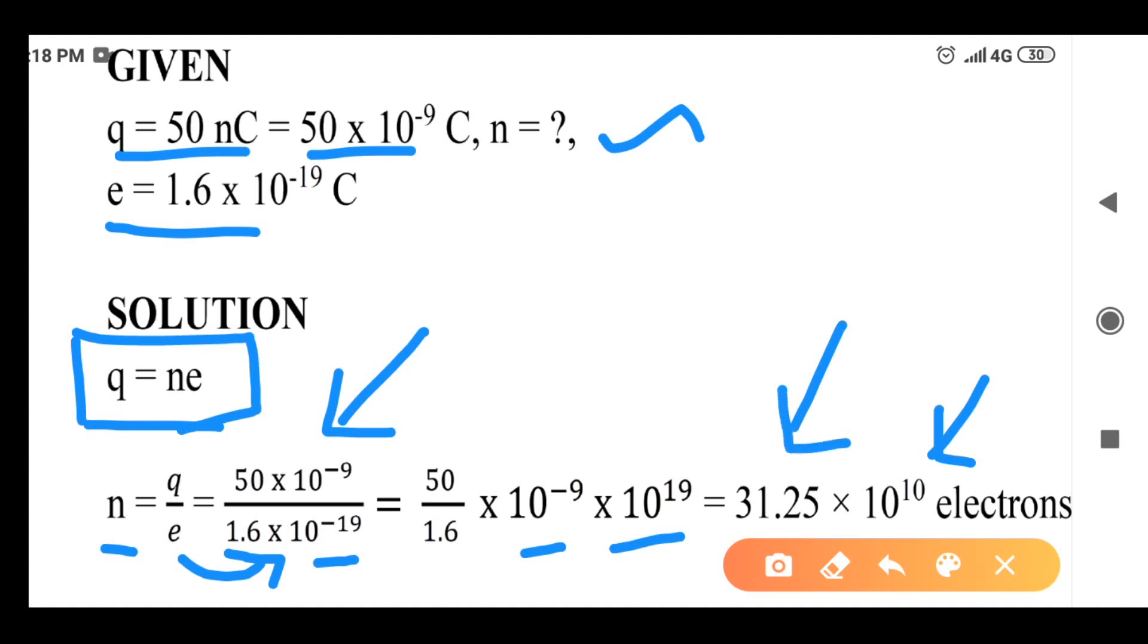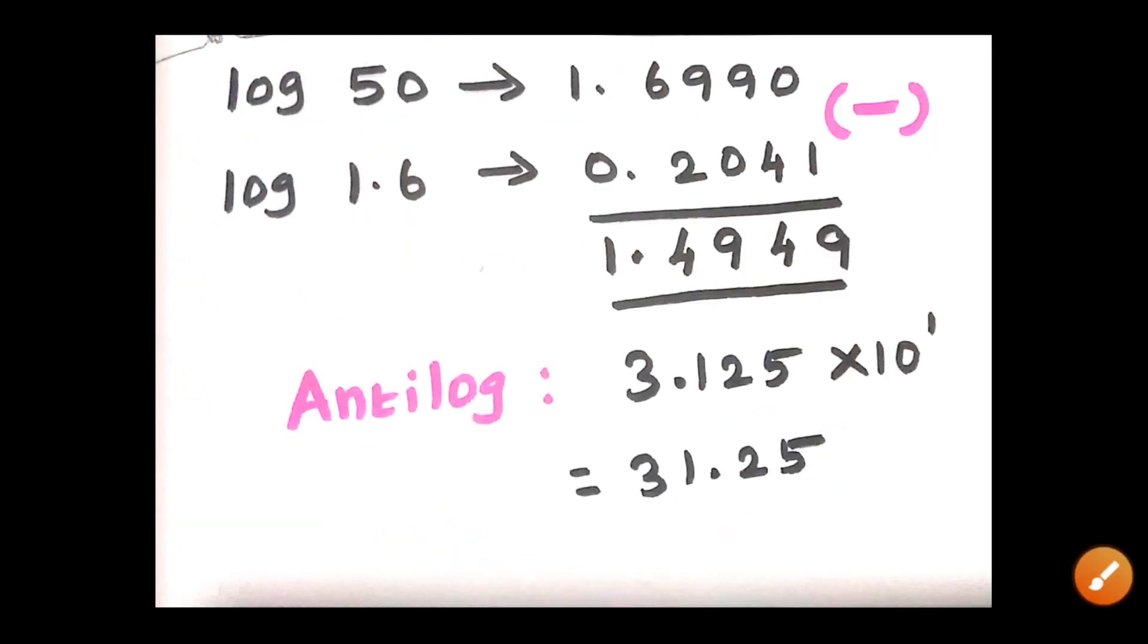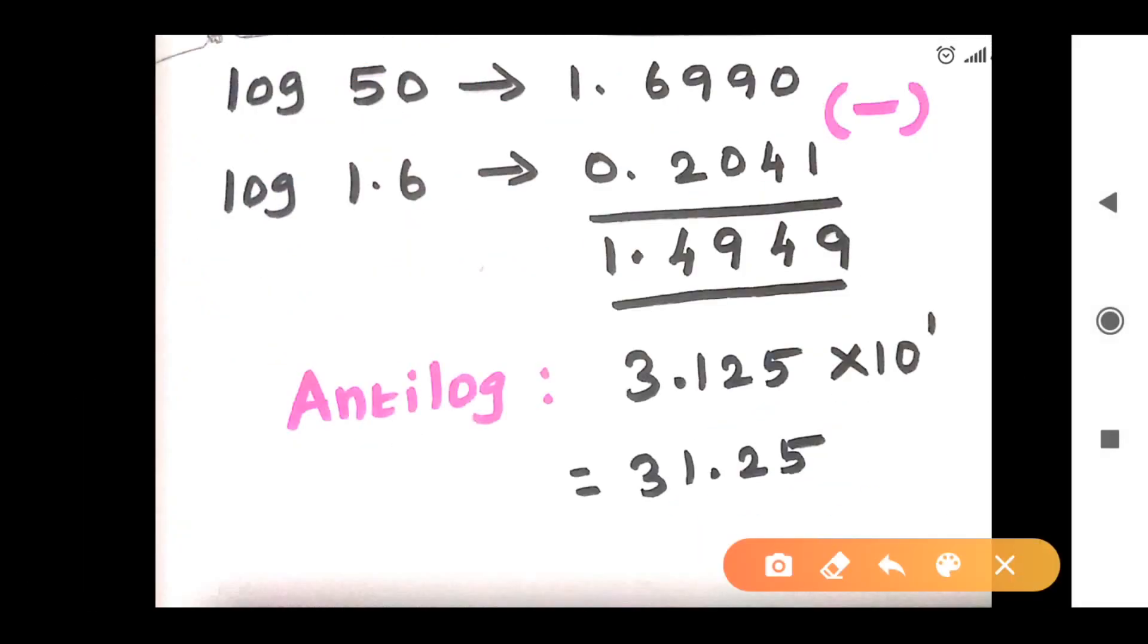then log. Log 50 value students is 1.690. Log 1.6 value is 0.2041.